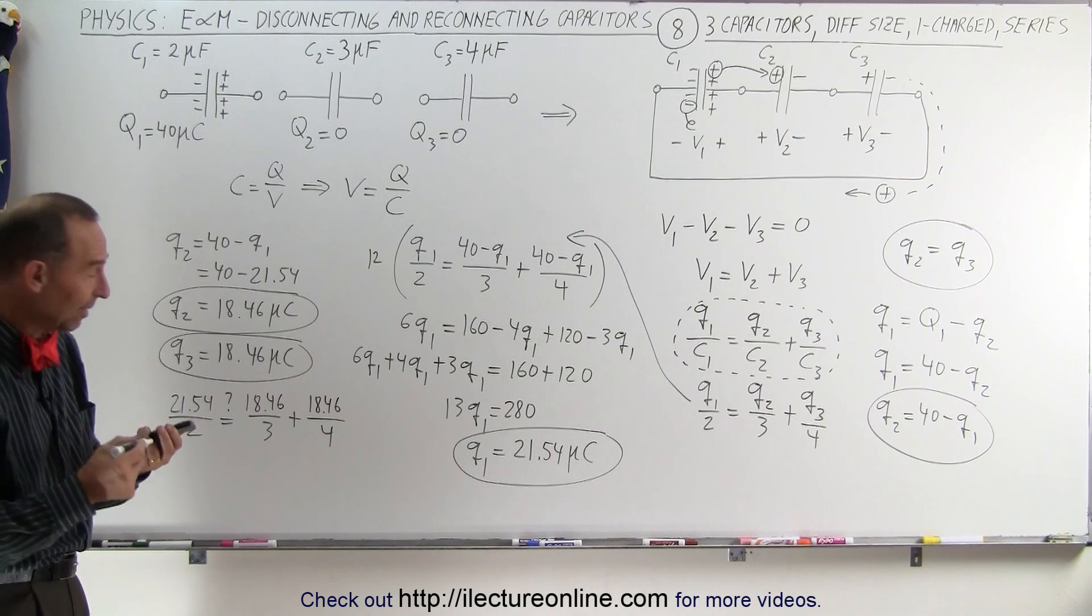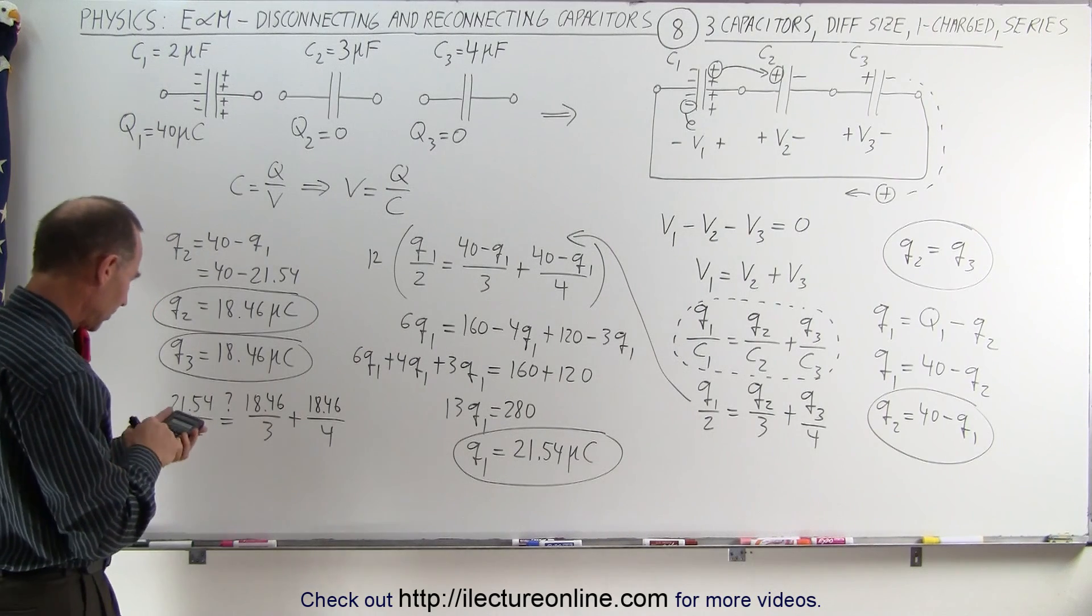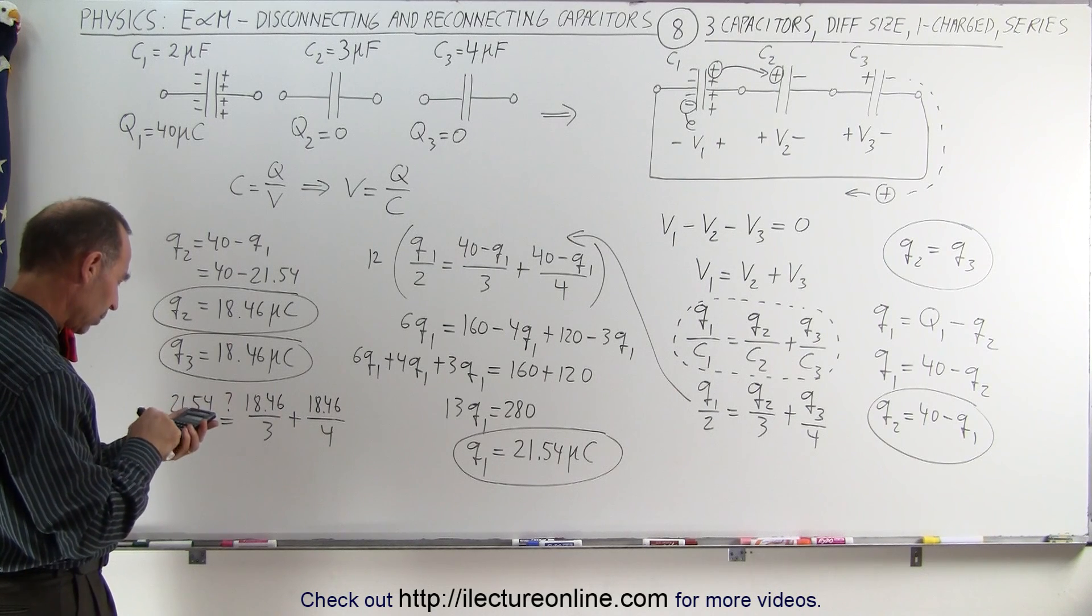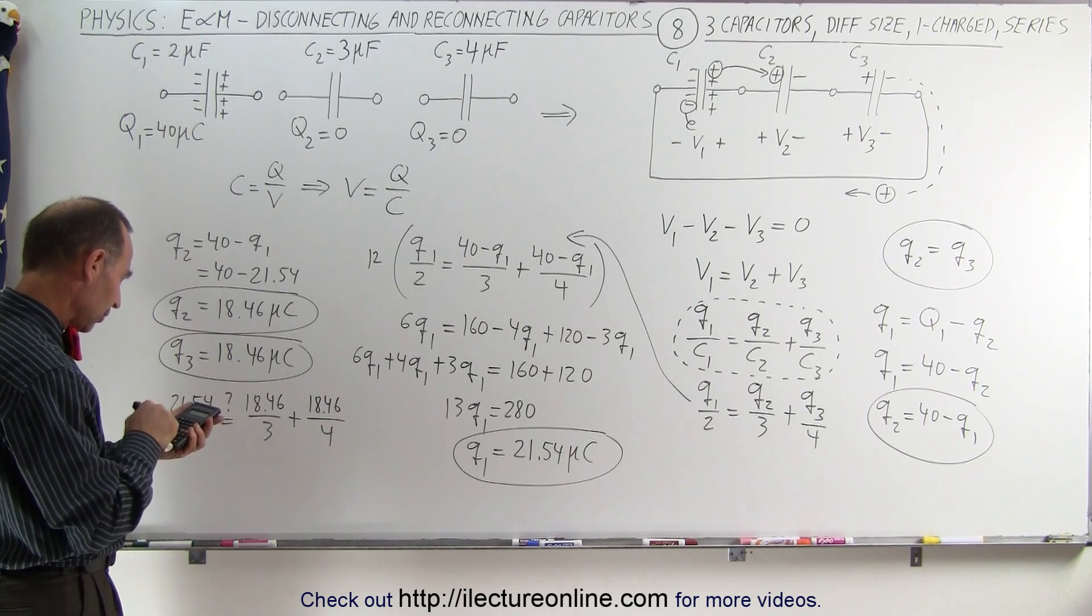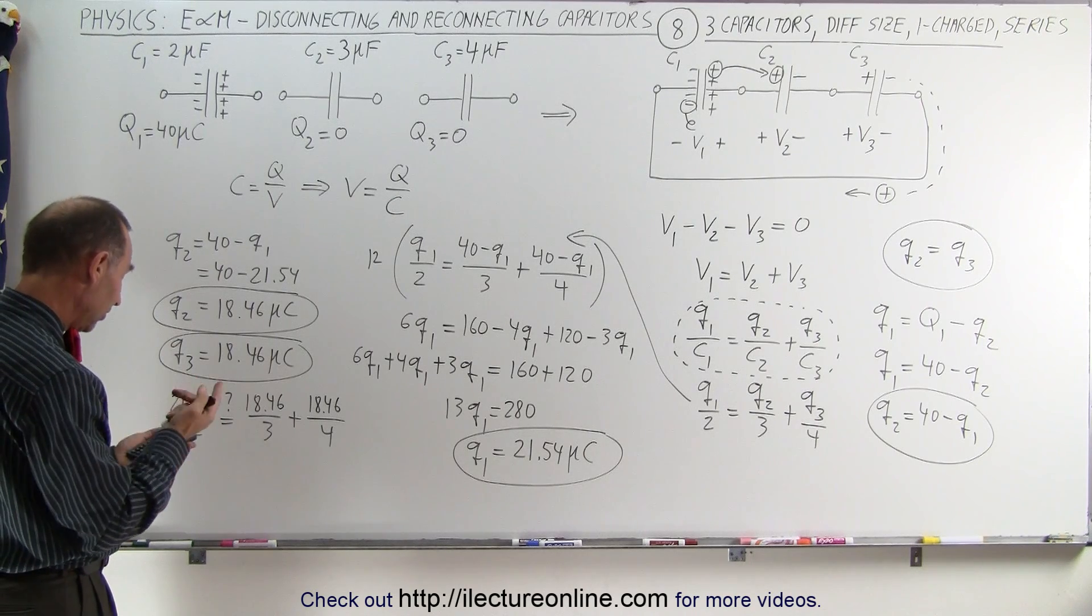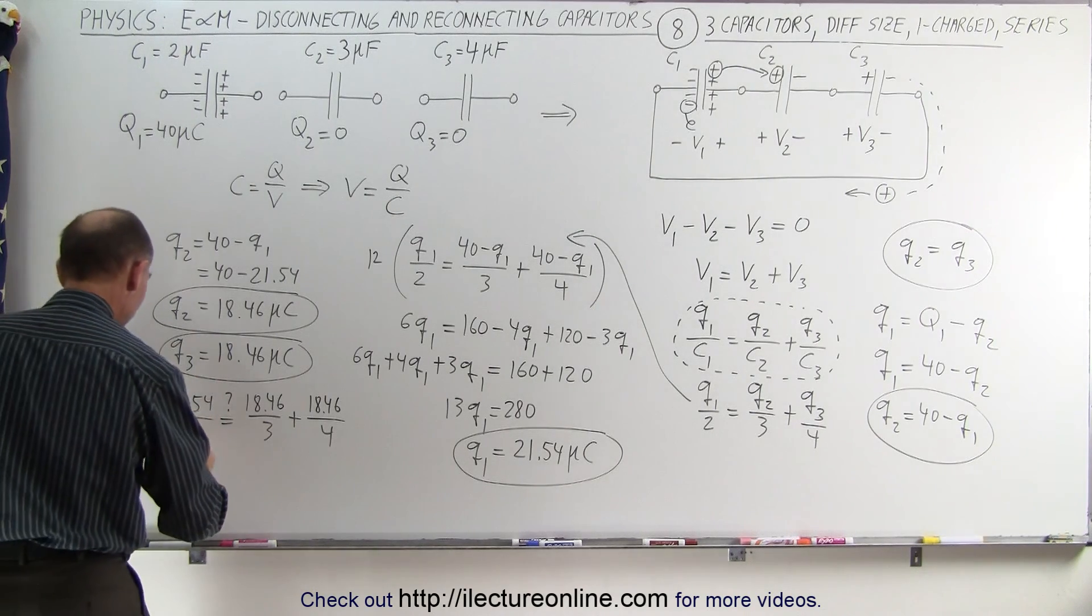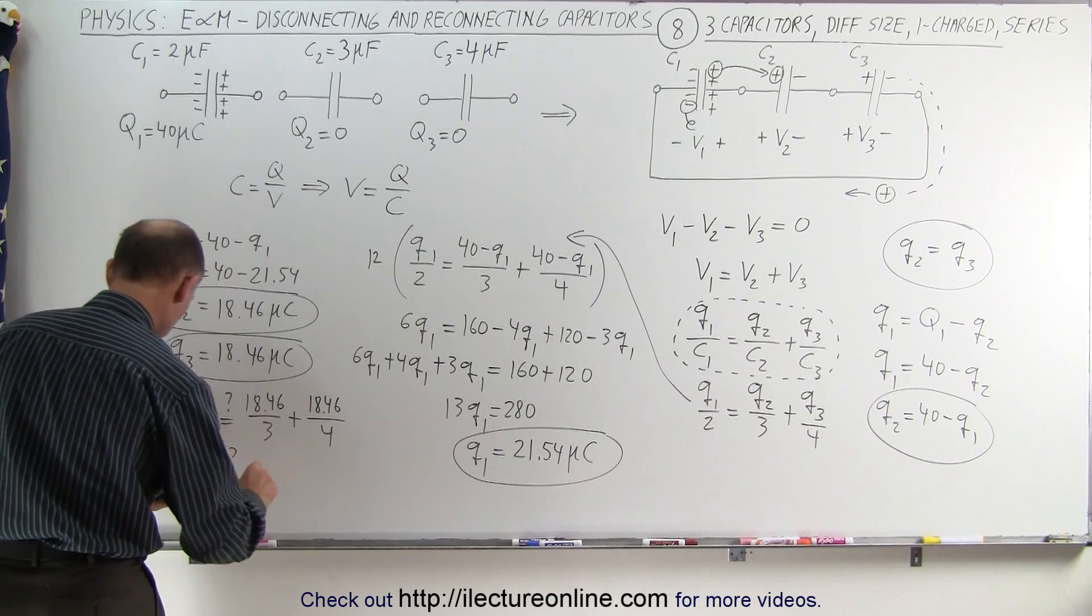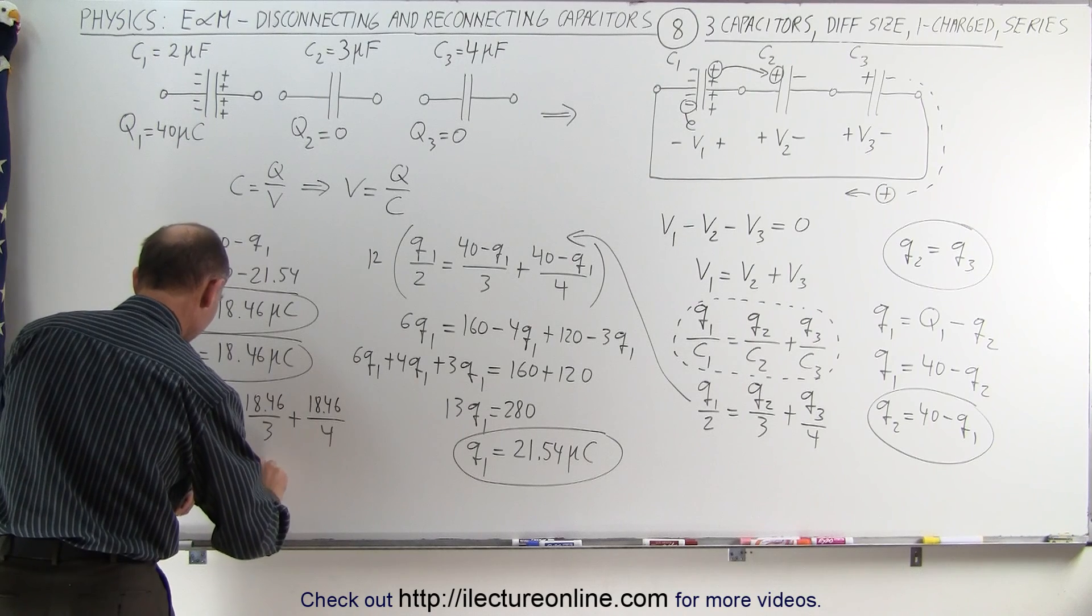Let's see if that ends up being correct. So I'm taking 18.46 divided by 3, plus 18.46 divided by 4. And when I do that, I get 21.54 divided by 2, is that indeed equal to 10.77.